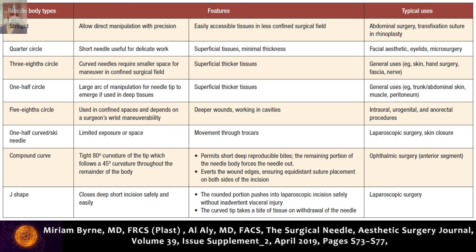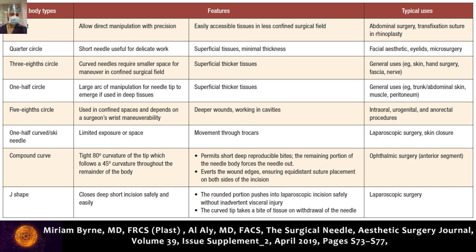Quarter circle needles are basically one-fourth circle and are used for fine procedures like eyelid surgery and micro-surgery. In general surgery, we use mainly half circle — for thicker tissue, generally trunk, abdominal, and muscle/peritoneum. Three-eighths circle is again for general use like skin, hand surgery, and facial curves. The J-shaped curve — ski needles — are more used in laparoscopic surgery.